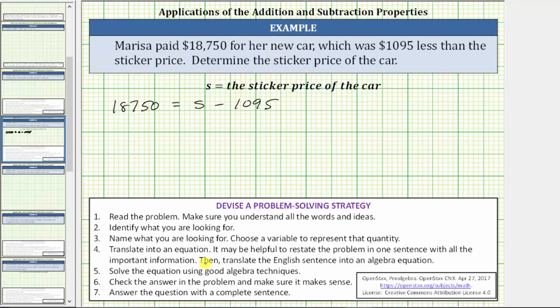Step five is to solve the equation. To solve this equation, we need to isolate S on one side of the equation. And because S is on the right side, we will isolate S on the right side, which means we need to undo the subtraction by performing the opposite operation to both sides of the equation. To undo minus $1,095, we add $1,095 to both sides of the equation.